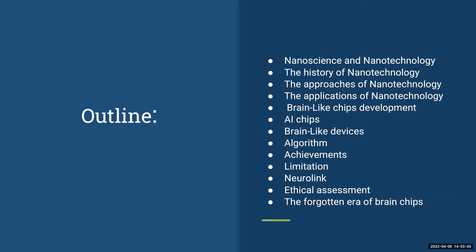The outline of my project: I'm going to start talking about nanoscience and nanotechnology, the history of nanotechnology approaches and applications, the development of artificial brain chips, brain-like devices, algorithms, achievements, limitations, Neuralink, and the ethical assessment.